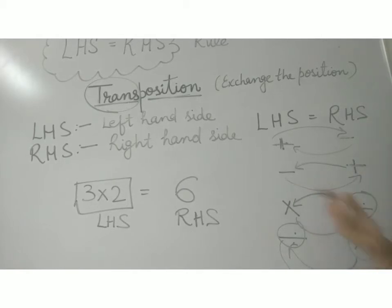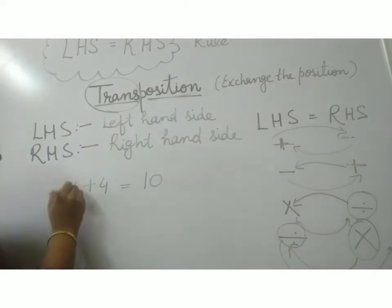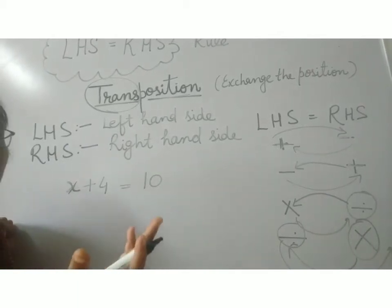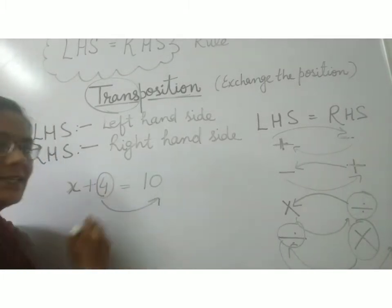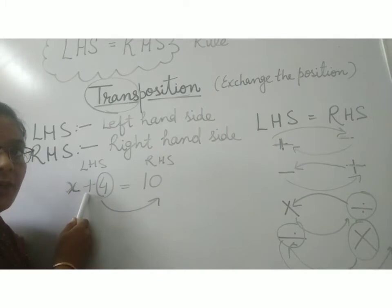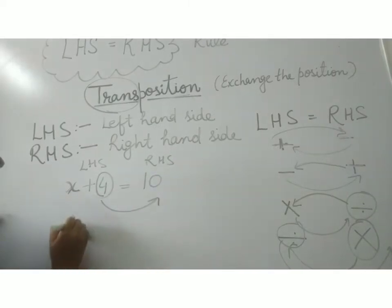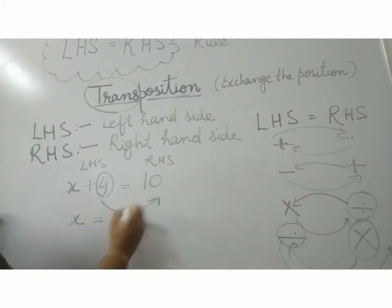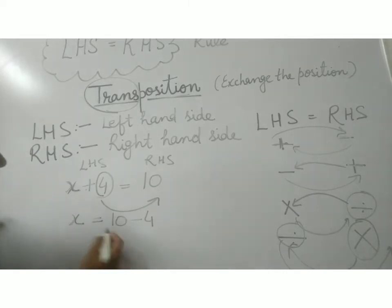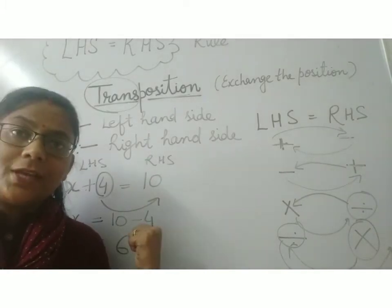I will show you some examples so you understand this. X plus 4 is equals to 10. X is a quantity which is unknown — this we have to find out. I will take this 4 to the right hand side. As 4 is adding on the left hand side, when I take this 4 to the right hand side, it will subtract. So, X is equals to 10 minus 4, which gives X equals 6. Children, you understood this?